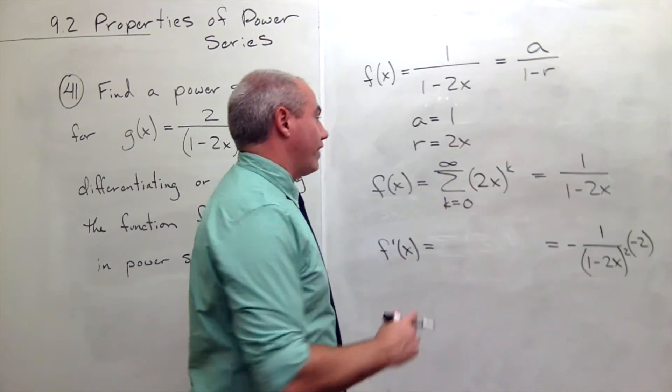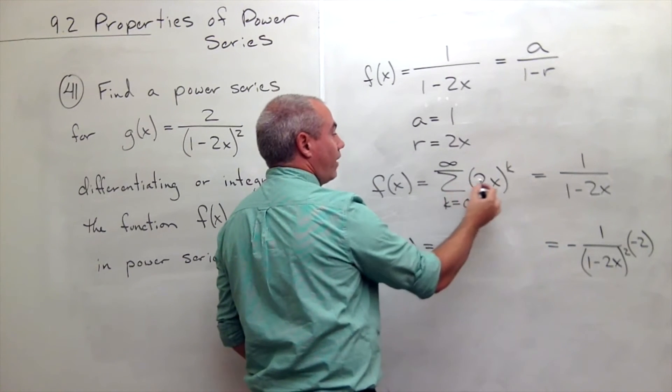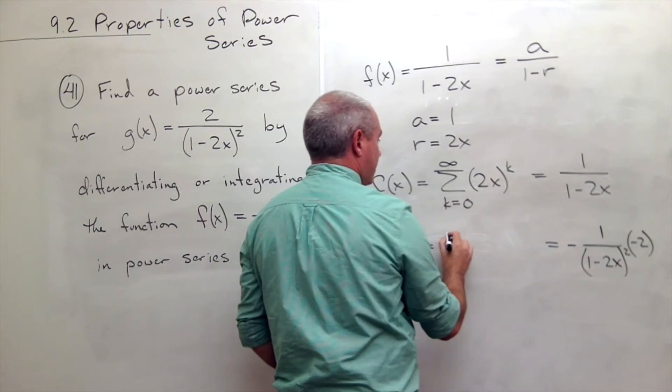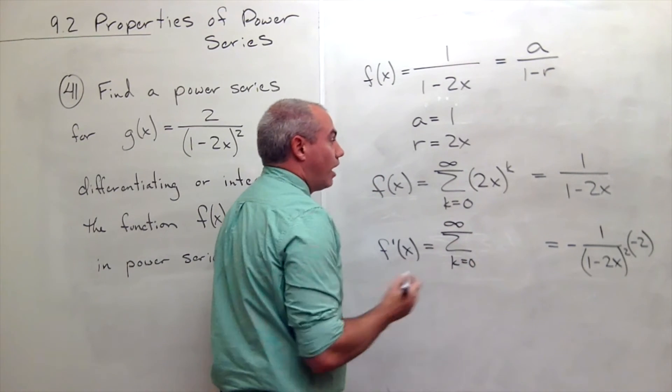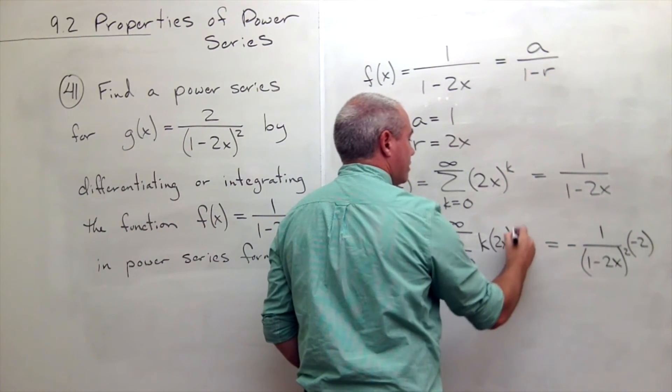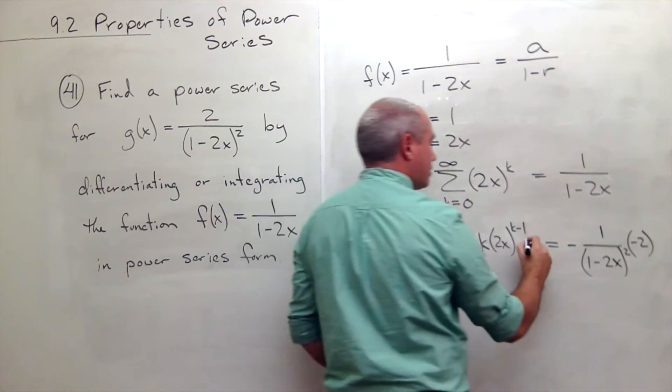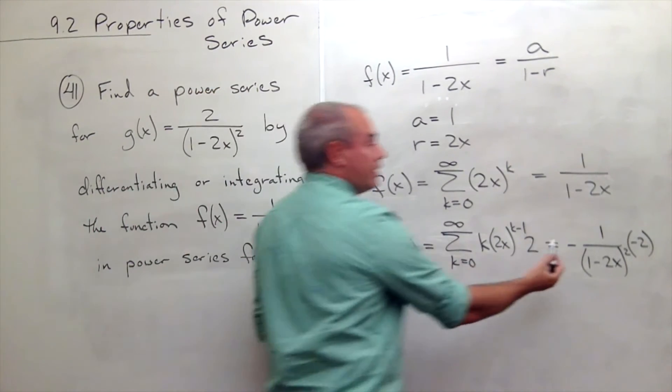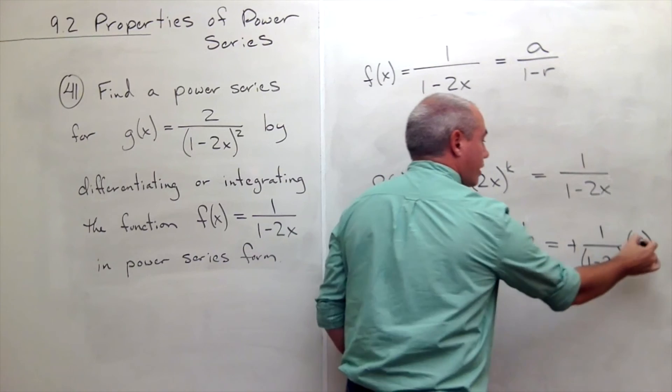Let's take the derivative and we'll get that job done. So if I take the derivative of 2x to the k, then I get sum k going from 0 to infinity of k times 2x to the k minus 1 times the derivative of the 2x, which is 2. Remember, negative times negative 2 is actually a positive 2.